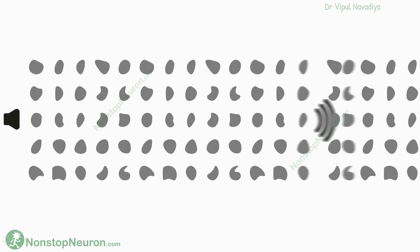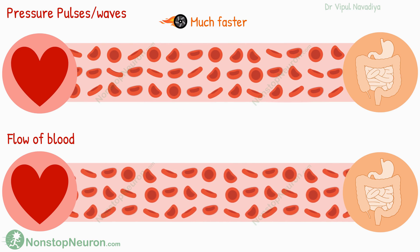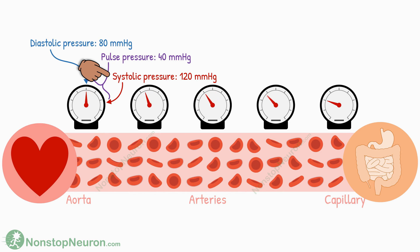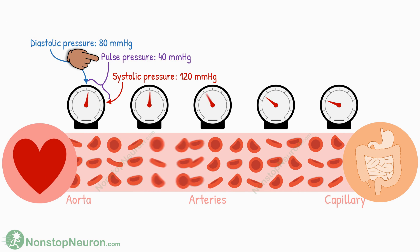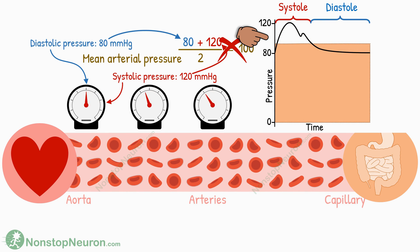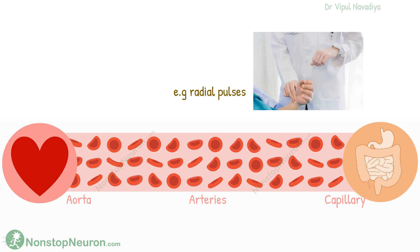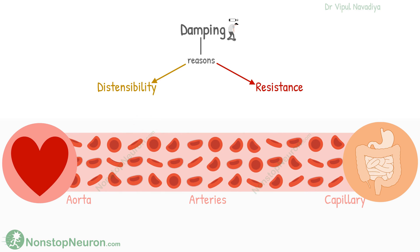So this was all about the transmission of pressure pulses from the aorta to the peripheral arteries. Quick summary: pressure waves travel through the blood like sound waves, with velocity much faster than blood flow itself. The highest pressure during pulsation is systolic pressure; the lowest is diastolic pressure; and the difference between the two is pulse pressure. Mean arterial pressure is the average pressure over the entire cardiac cycle. Traveling pressure pulses cause distension of the vessel wall, which can be felt from the skin. The pulse travels faster in stiff vessels and progressively dampens due to compliance and resistance.